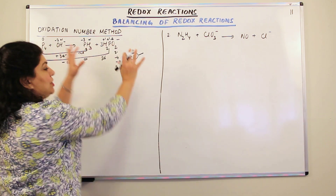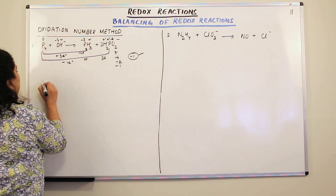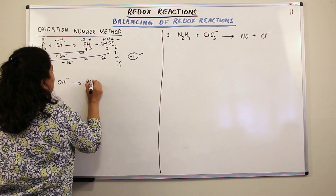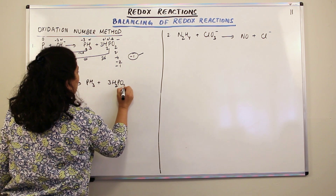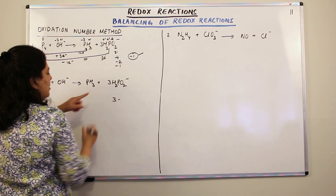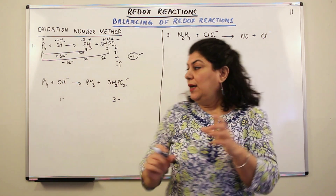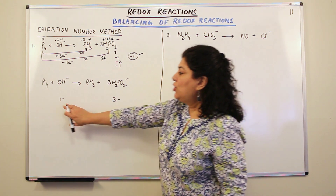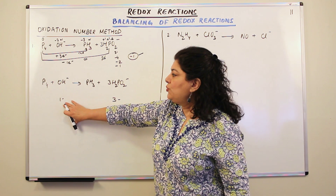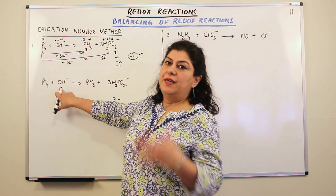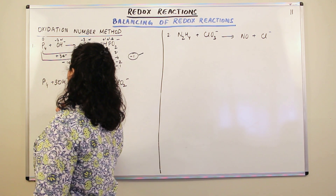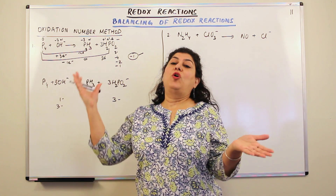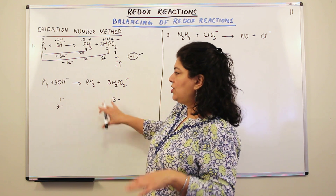Let us write down the equation again without the oxidation states. You have P4, which is neutral, plus OH negative — one negative charge — giving PH3, which is neutral, and three times H2PO2 negative — three negative charges. On the reactant side you have one negative charge and on the product side you have three negative charges. To balance, you need two more negative charges on the reactant side, so add two more OH negatives to make it three OH negatives. Now there are three negative charges on each side and the charges are balanced.